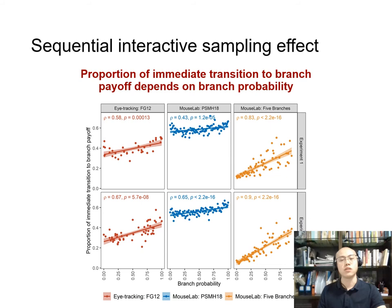To more closely mimic the sequential attention dynamics, we calculated a second measure called the proportion of immediate transition from the branch probability to the branch payoff. We find this proportion of immediate transition is highly dependent on the branch probability, which is again consistent with the interactive sampling hypothesis. Overall, we find a very strong effect in the attention data across the six experiments consistent with the interactive sampling hypothesis.